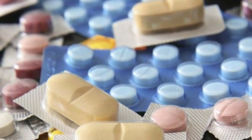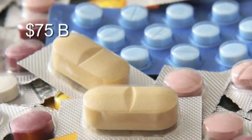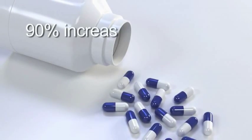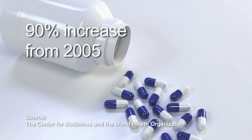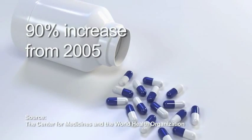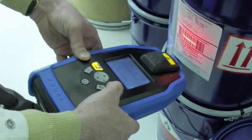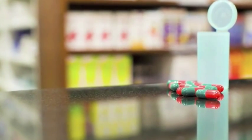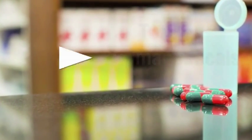Sales of counterfeit drugs are expected to reach $75 billion in 2010, which is an increase of more than 90% from 2005. TruScan provides field inspectors with the ability to detect counterfeit product in the supply chain, along with the ability to add authentics to the TruScan library and verify against samples collected in the field.